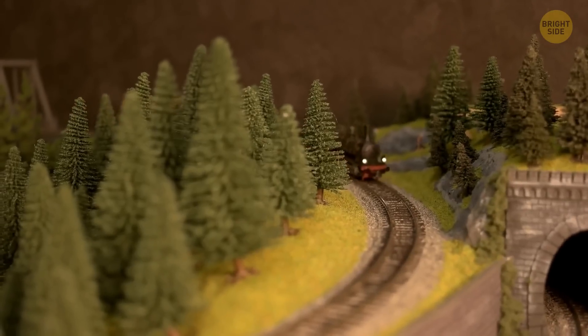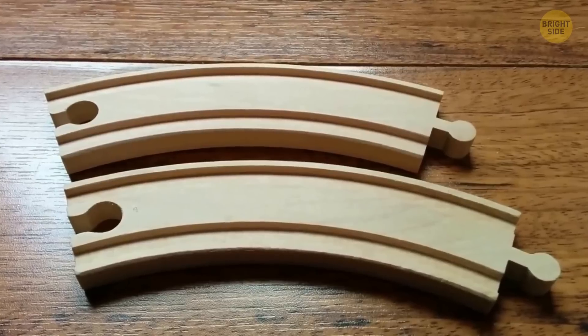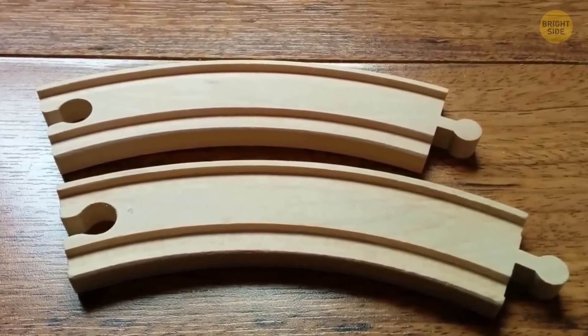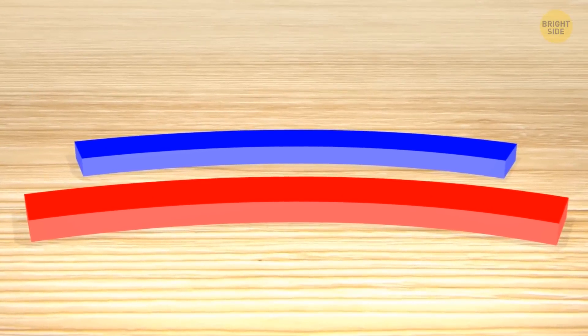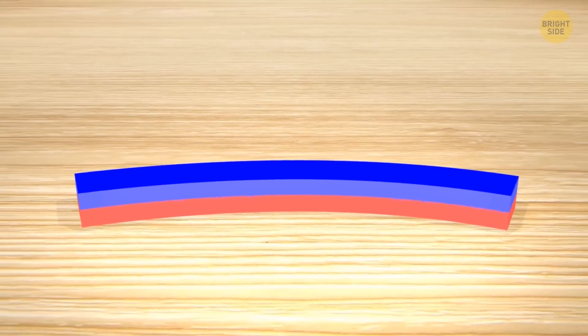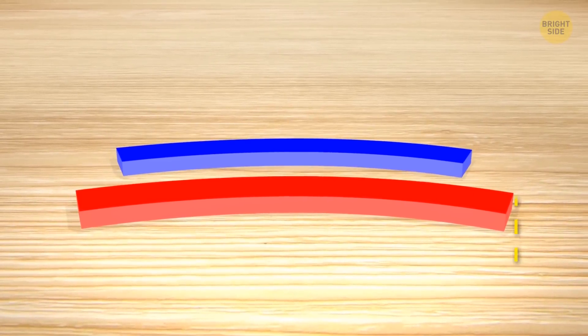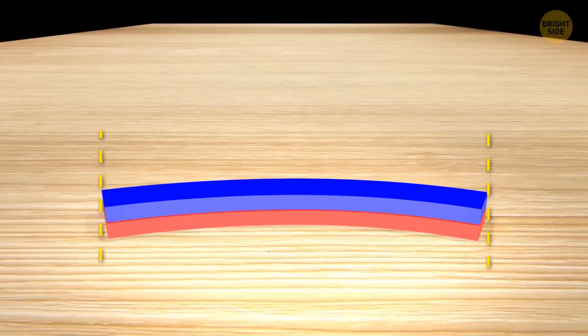If you have a toy train track at home, you can see how the next illusion works in reality. You take two segments of the same size and put them next to each other. One of them looks obviously larger than the other one. That's because your brain compares the two sides of the pieces that are next to each other. It compares the right side of the track that's on the left to the left side of the track that's on the right.